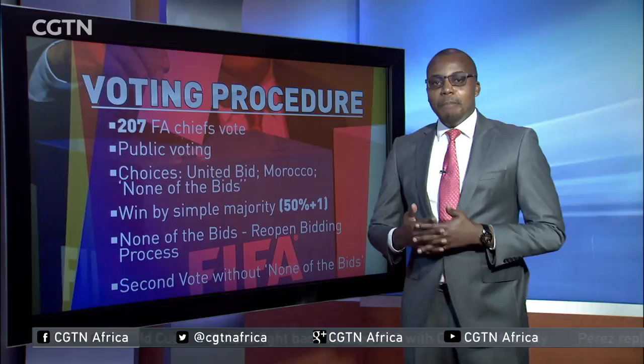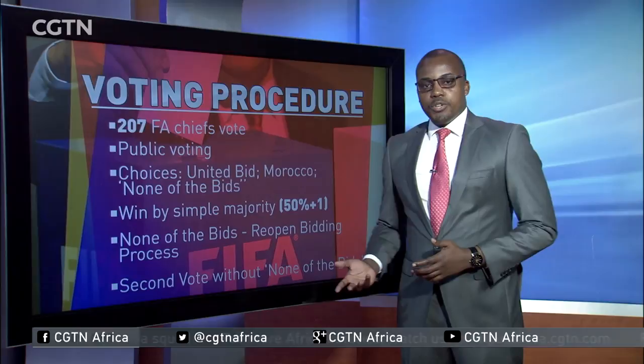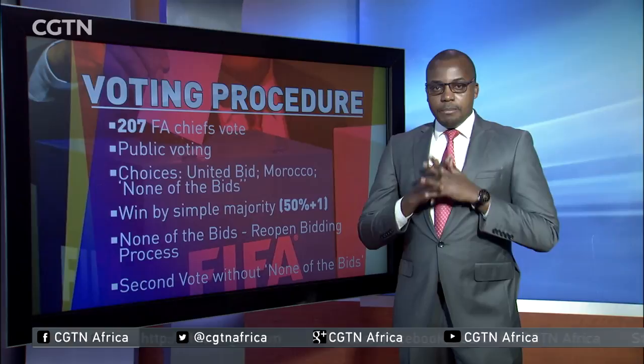There are three choices: you either pick the United bid, Morocco, or — and this is very important — none of the bids. To win, a bid needs a simple majority, which is more than 50% of the total vote. That would be 105 votes if there are no abstentions.